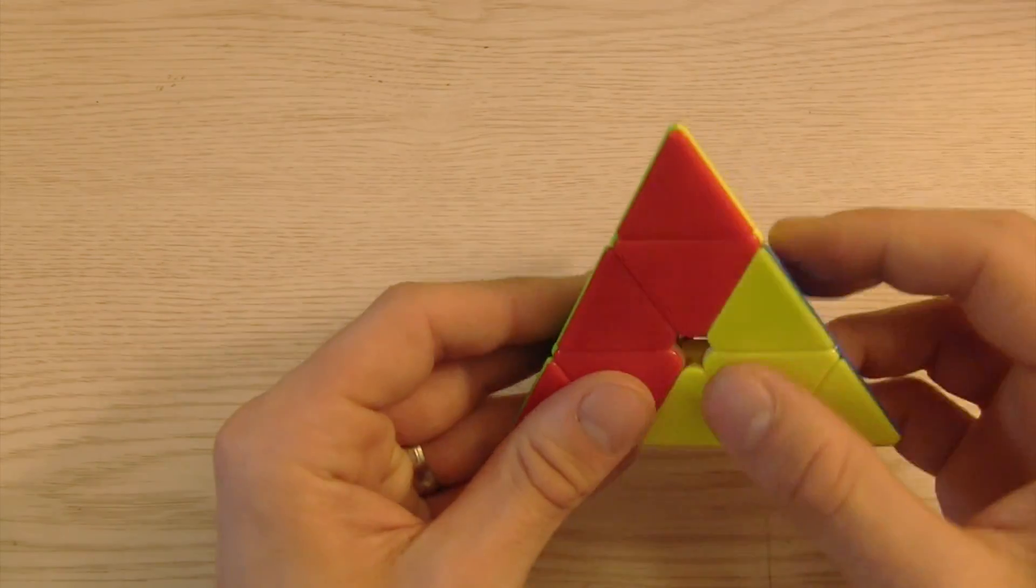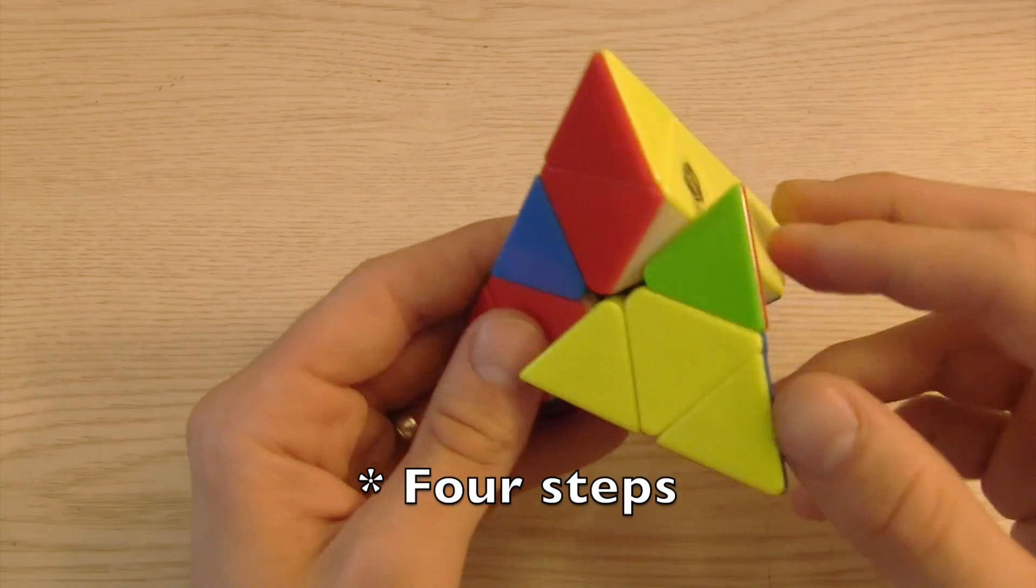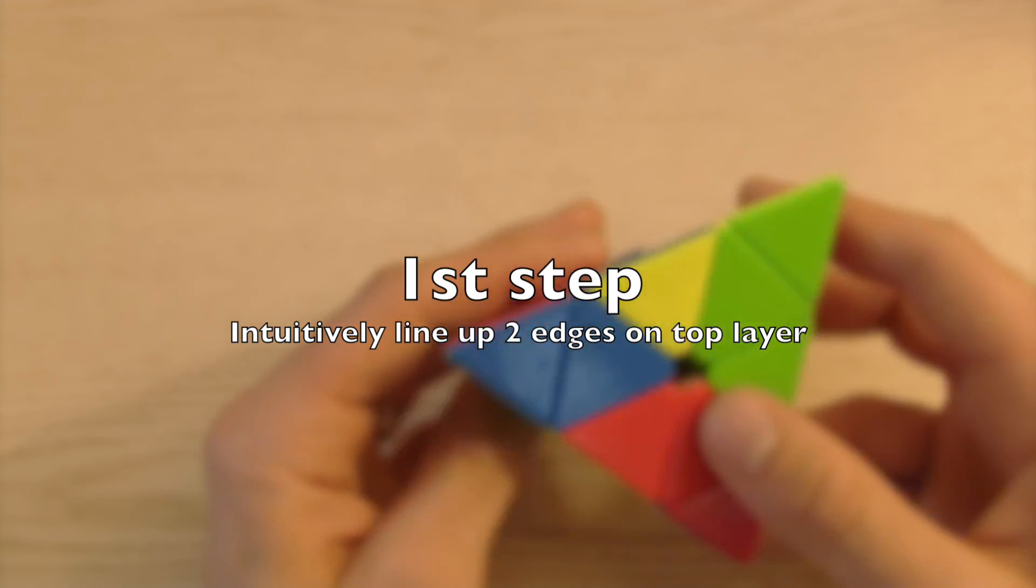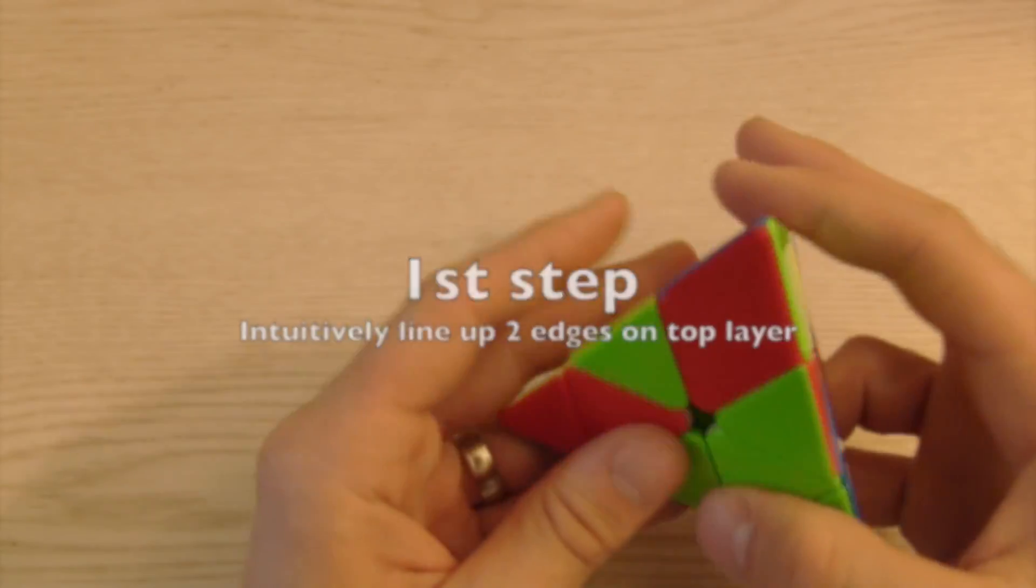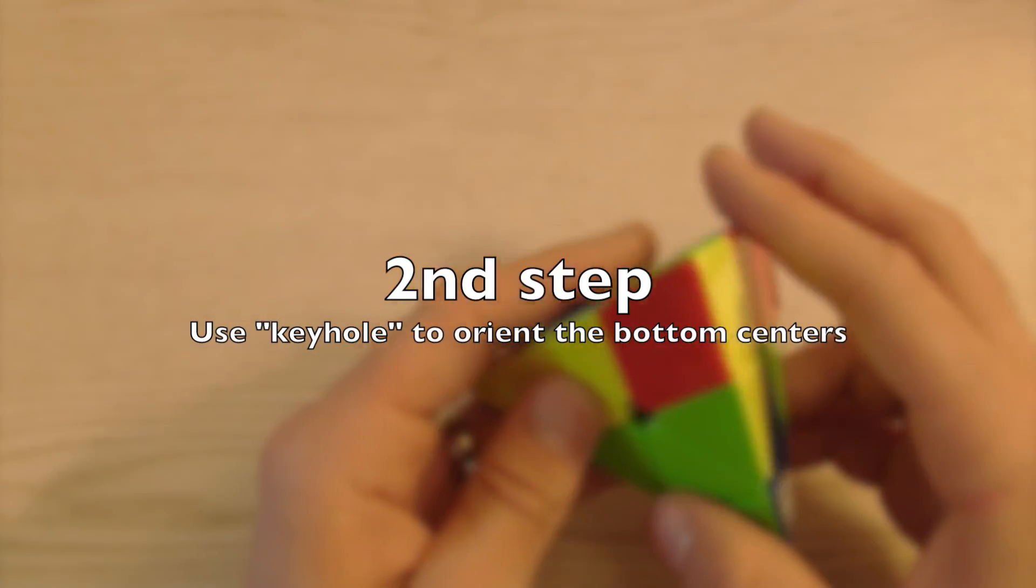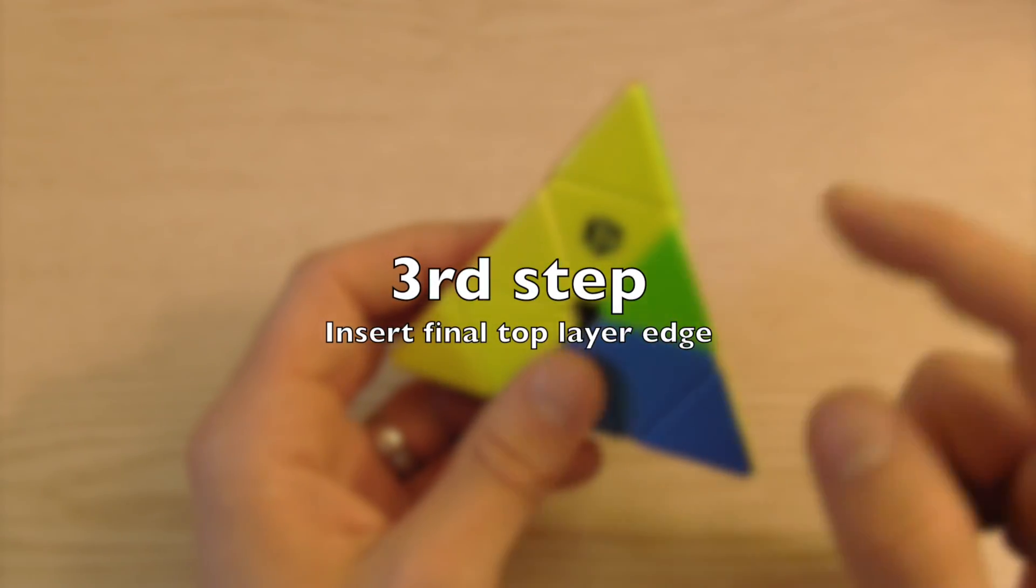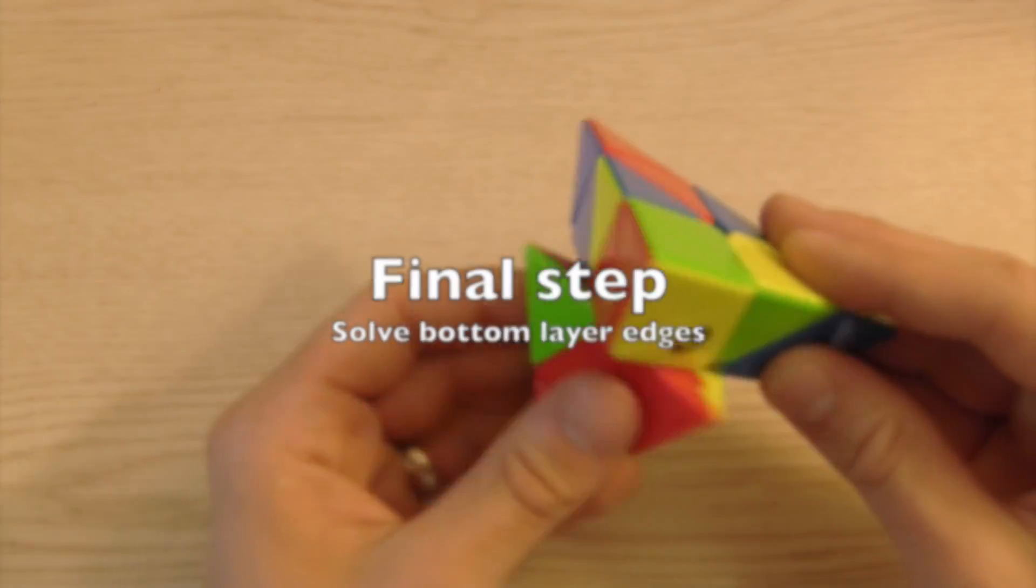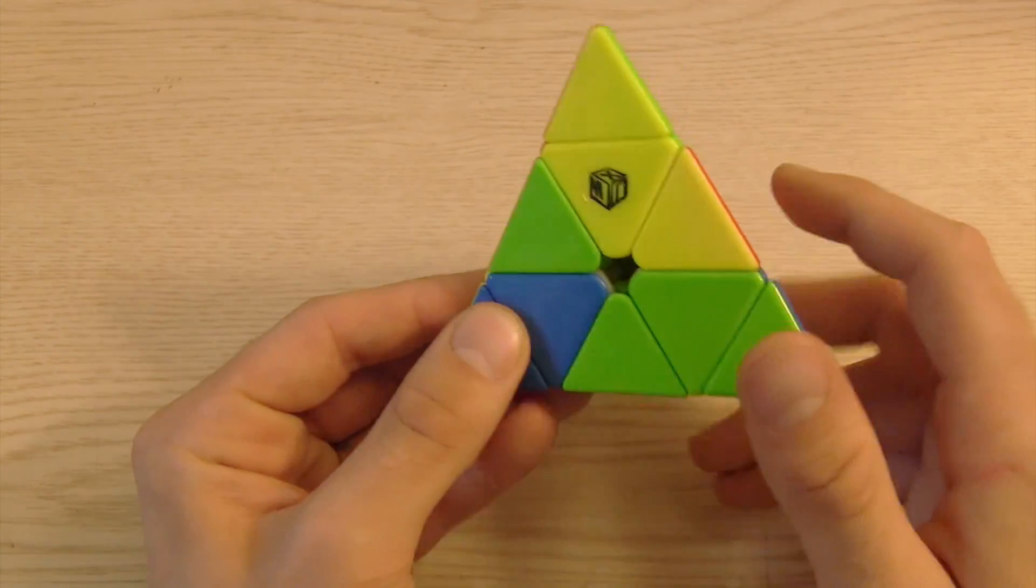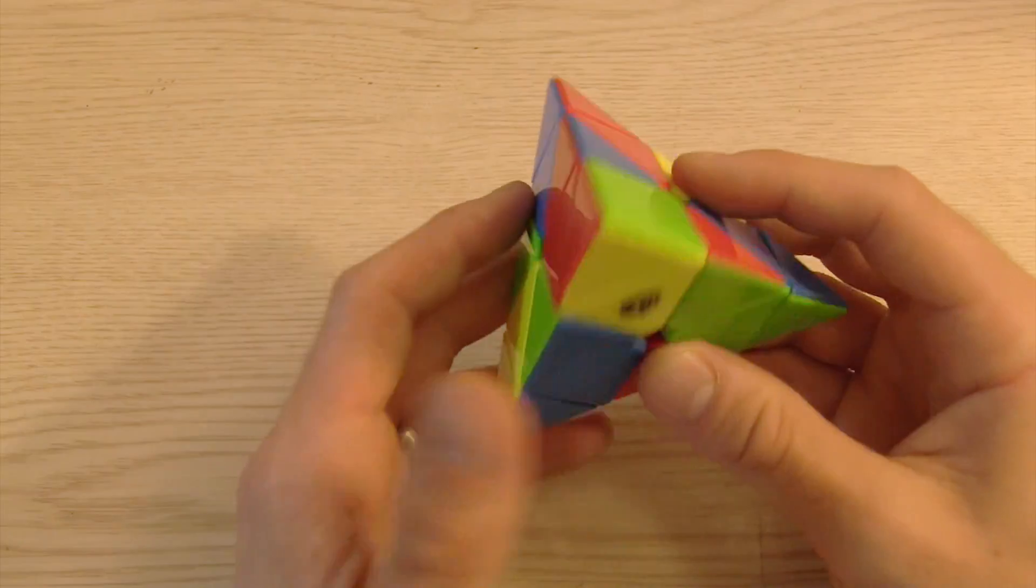As far as solving this, the way it's going to work is there's three steps really. There is the intuitive part where you're solving two edges. You use the keyhole to insert or orient the bottom three centers. Then you put in the final edge and solve the bottom side. There's not many algorithms and mostly algorithms are the same sort of thing on pyraminx. It always is something like that. Here's how this works.